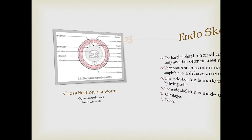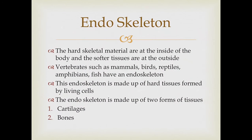Next is the endoskeleton, our last skeletal system. In this type, the hard skeletal materials are on the inside of the body and the softer tissues are on the outside. Vertebrates such as mammals, birds, reptiles, amphibians, and fish have an endoskeleton. It is made up of hard tissues formed by living cells, specifically two forms: cartilages and bones.